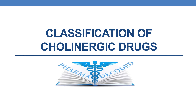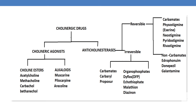Hello everyone. Now let us discuss about classification of cholinergic drugs. Cholinergic drugs are broadly categorized into two categories: cholinergic agonists and anti-cholinesterases. Coming to cholinergic agonists, they are again subcategorized into choline esters and alkaloids.